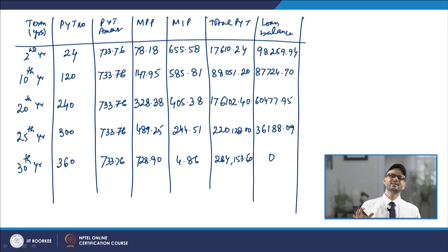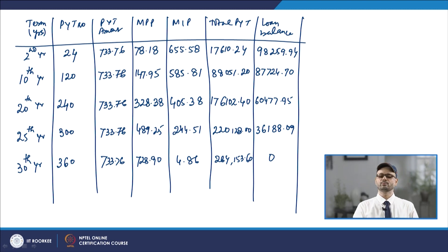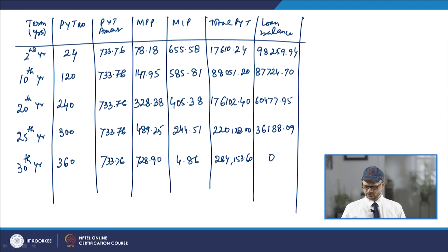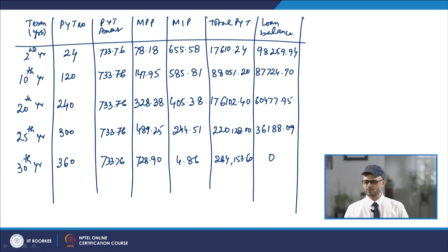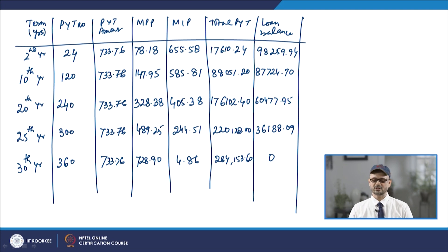As observed, in the first month MPP was only ₹67.09, by the 25th year it is ₹489.25, and in the last payment, out of ₹733.76, ₹728.90 goes toward the principal. The interest portion is very small towards the end because the outstanding balance is very low. Finally the balance becomes zero — that is how amortization schedules are calculated. You can solve different problems based on such schedules to gain more confidence.